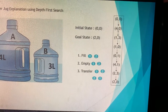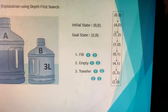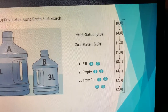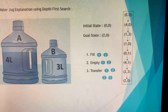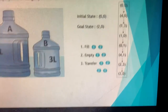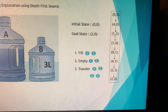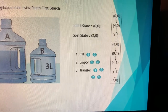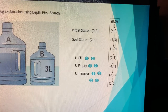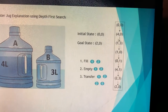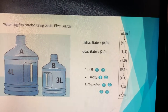From state (4, 0), we transfer water evenly. Four plus zero equals four, and one plus three also equals four, so we distribute: jug A gets one liter and jug B gets three liters, giving state (1, 3). From (1, 3) we empty jug B, leaving jug A with one liter and jug B empty, giving state (1, 0).